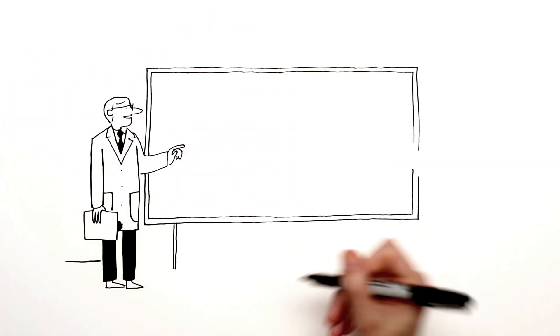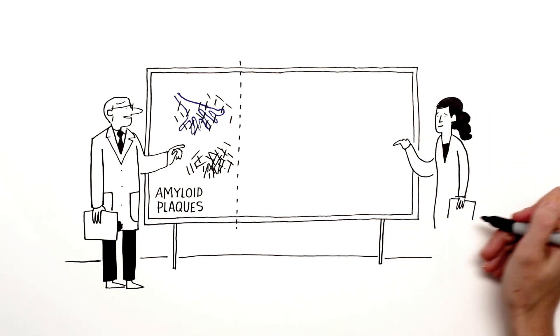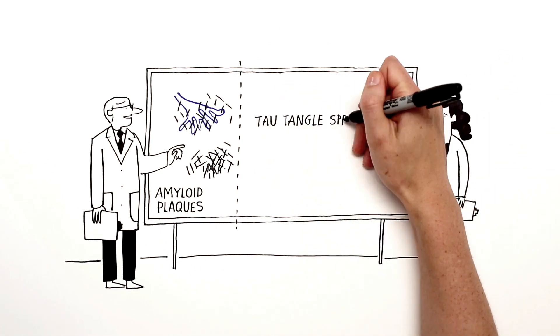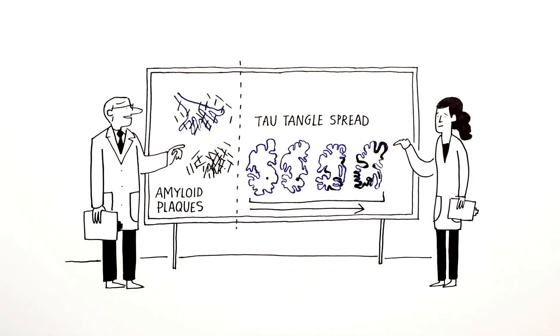For many years, amyloid plaques were thought to be the main culprit in Alzheimer's. Scientists now accept that the steady progress in patients' dementia is more likely to be driven by the spread of tau tangles through the brain.